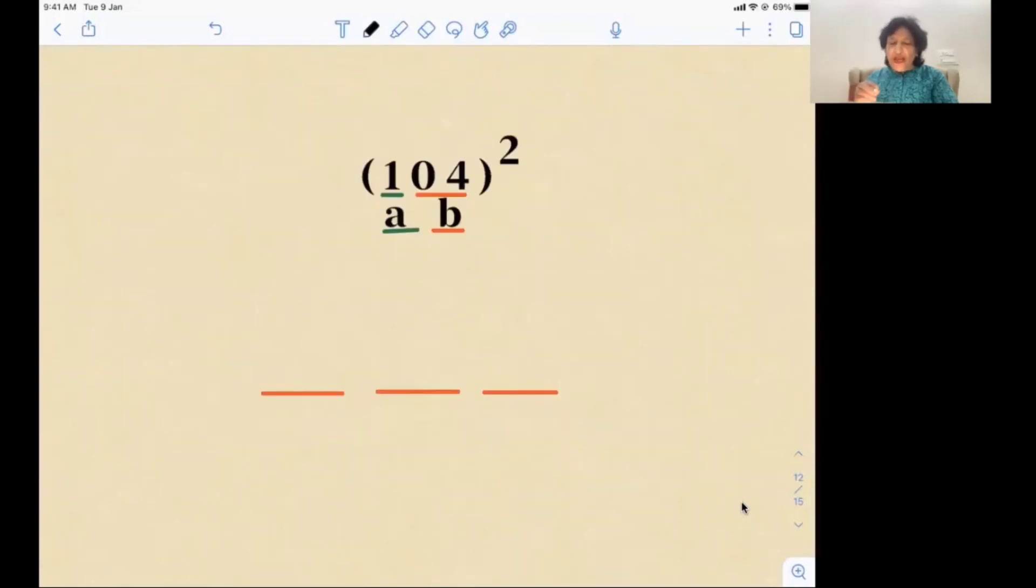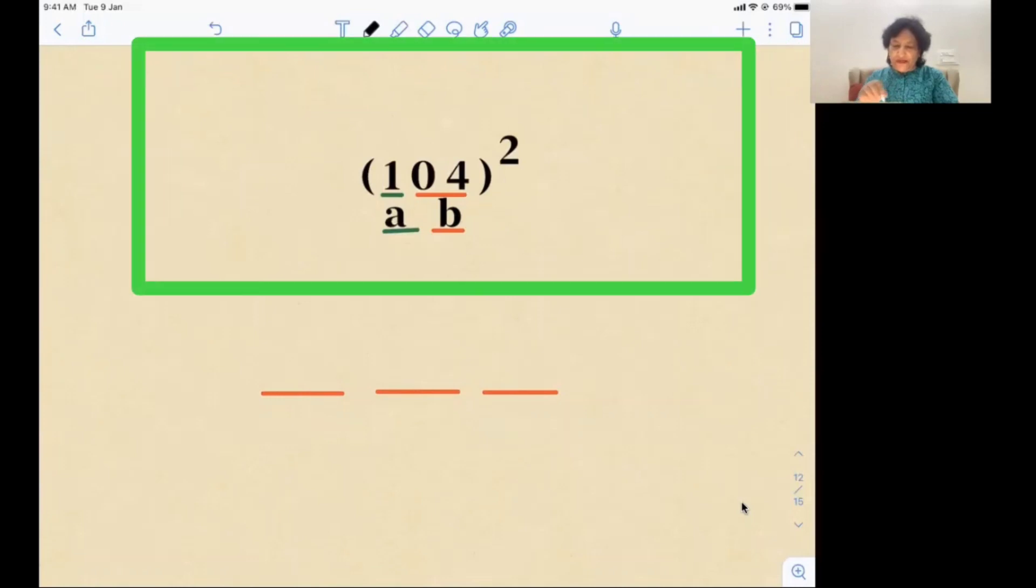Now suppose we have a three-digit number like this: 104 squared. We will consider this first one as a one digit, and this zero four as b. So what will be our first step? First step is a squared, so one squared is one.